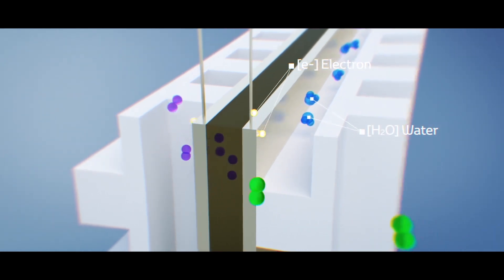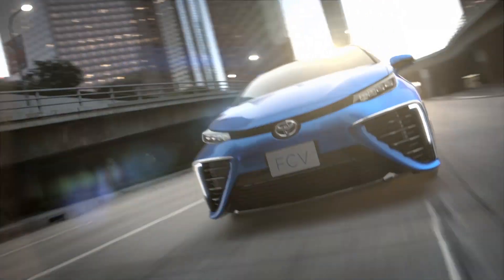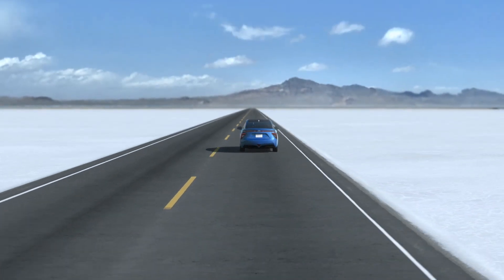The electricity is then used to power the Mirai's electric motor, delivering 151 peak horsepower and up to 247 pound-feet of torque.